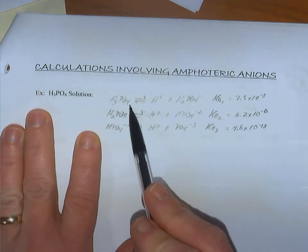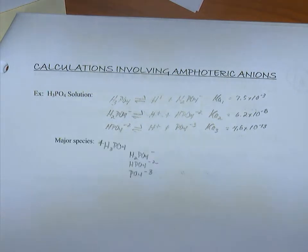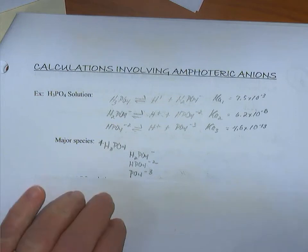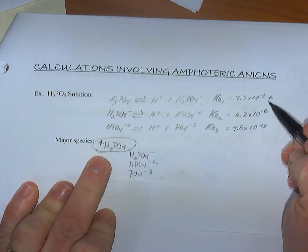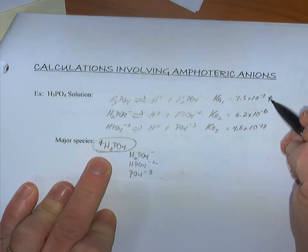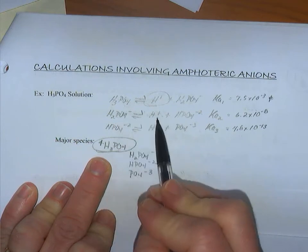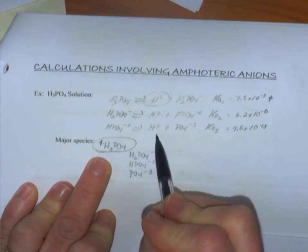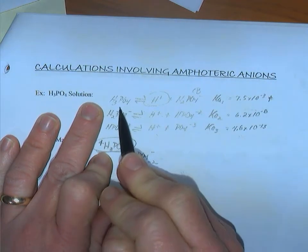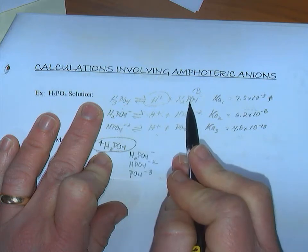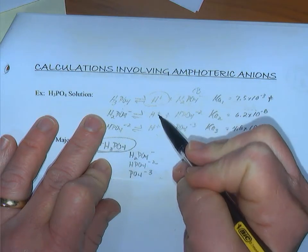If we have a phosphoric acid solution, H3PO4, we know it has three ionizable hydrogens. If asked for the pH or the hydrogen ion concentration, we only have to consider H3PO4 as our major species because of its strong acid tendency and higher Ka value. The creation of hydrogen ion by this stronger acid will discourage contributions of more hydrogen ion from the subsequent ionizations. H2PO4⁻ is officially the conjugate base of H3PO4, but it goes on to play the role of acid because of the presence of the hydrogen ion from the strong acid.